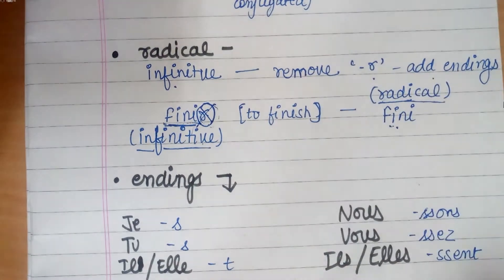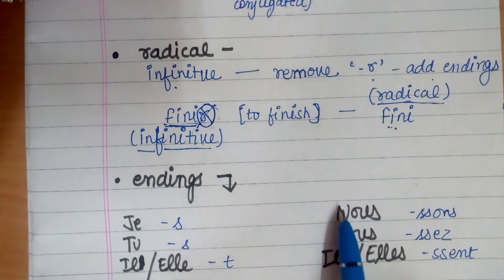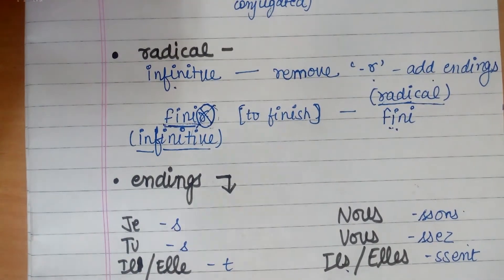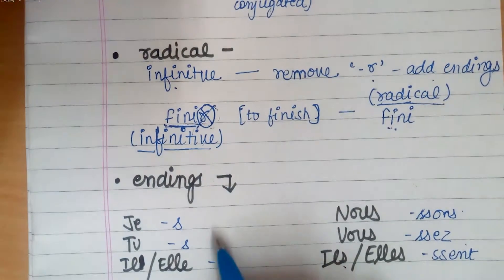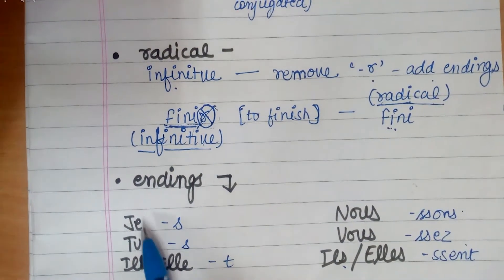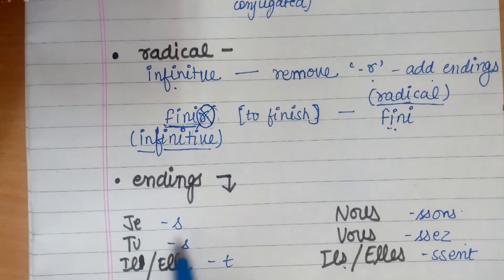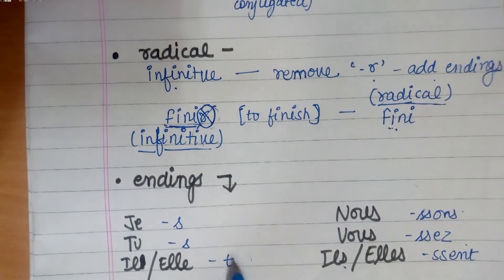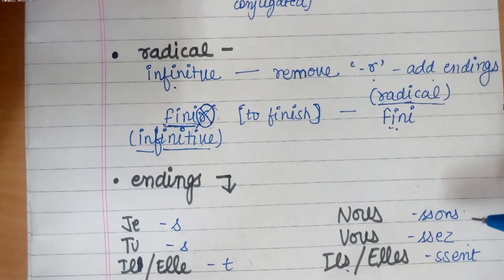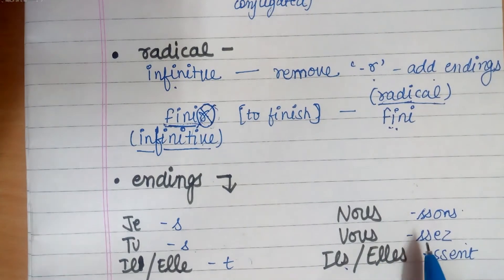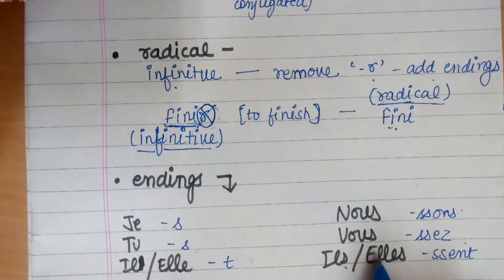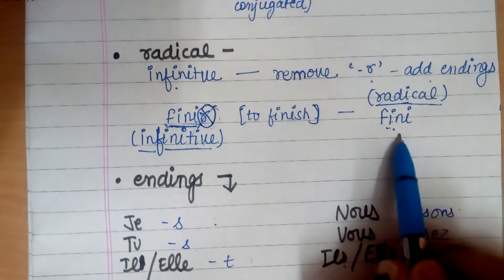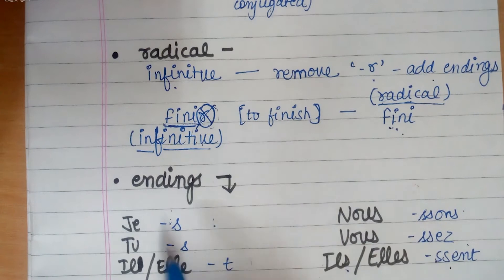In this radical, according to each subject pronoun, we add corresponding endings. The endings are: for je we'll add S, tu S, il or elle we'll add T. In nous we'll add S-S-O-N-S, in vous we'll add S-S-E-Z. In ils or elles, in both cases we'll use S-S-E-N-T. We'll take this radical form and add these endings according to the subject pronouns.